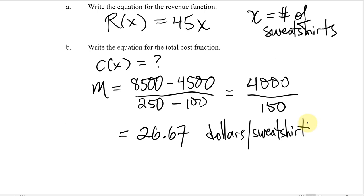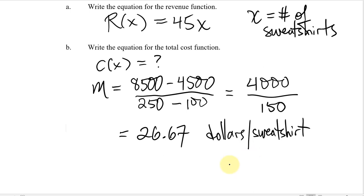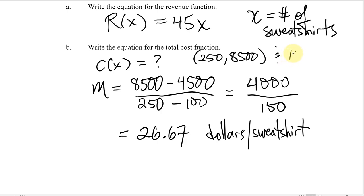That's the cost to the distributor. We need to get the actual cost equation, so we could use either of these points. We have the point (250, $8,500) — 250 shirts costs $8,500 — and another point (100, $4,500). We're really getting the equation of the line that connects these two points.